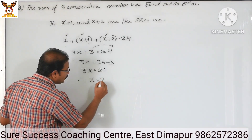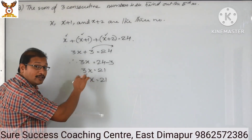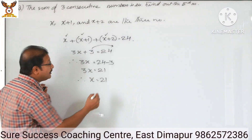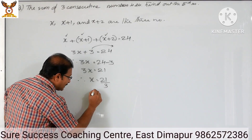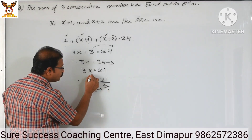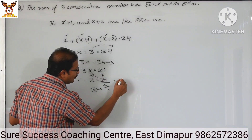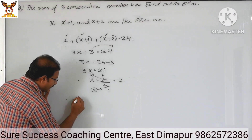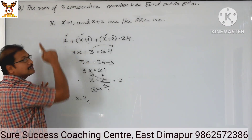Therefore, x equals 21. Since 3x means 3 is multiplied, multiplication goes to the next side as divide, so divide by 3. We will cancel by 3 — 3 ones are 3, 3 sevens are 21 — that means x equals 7. Therefore the first number is 7.